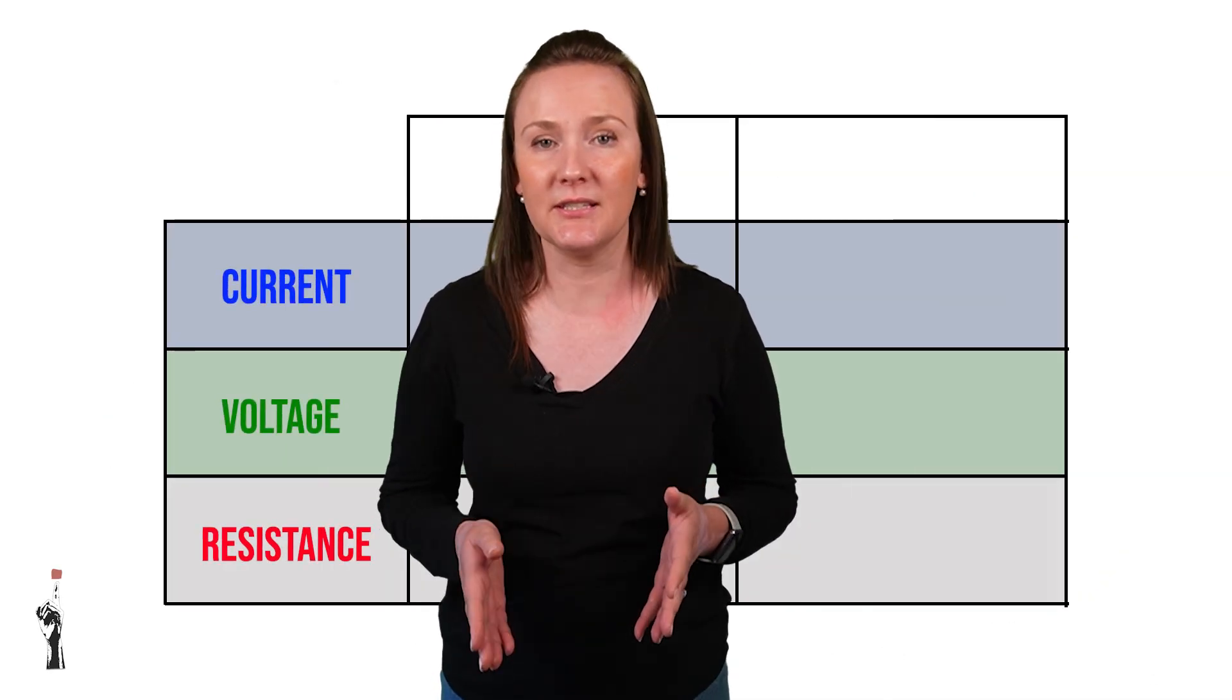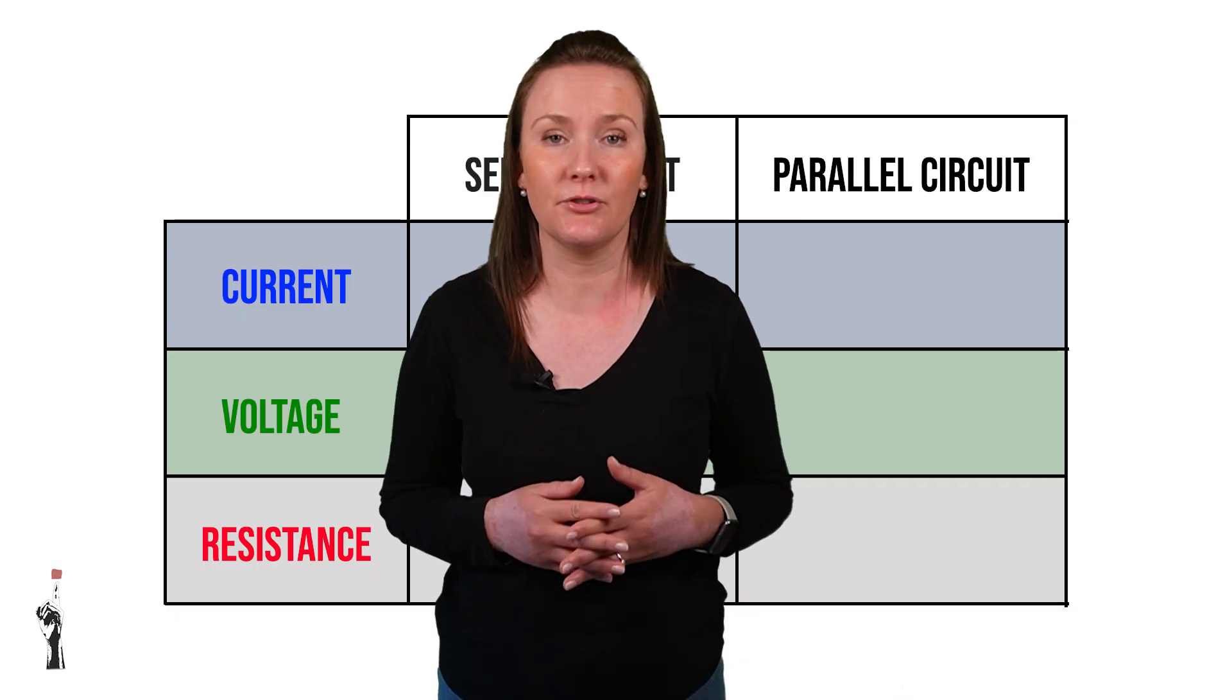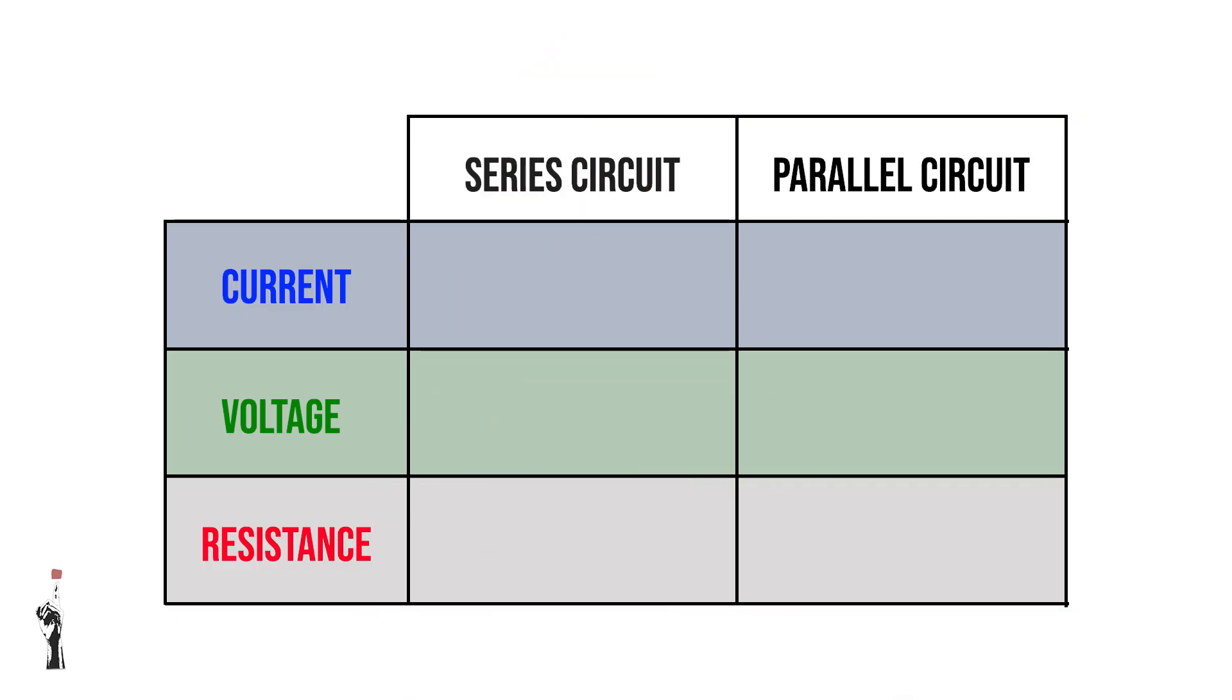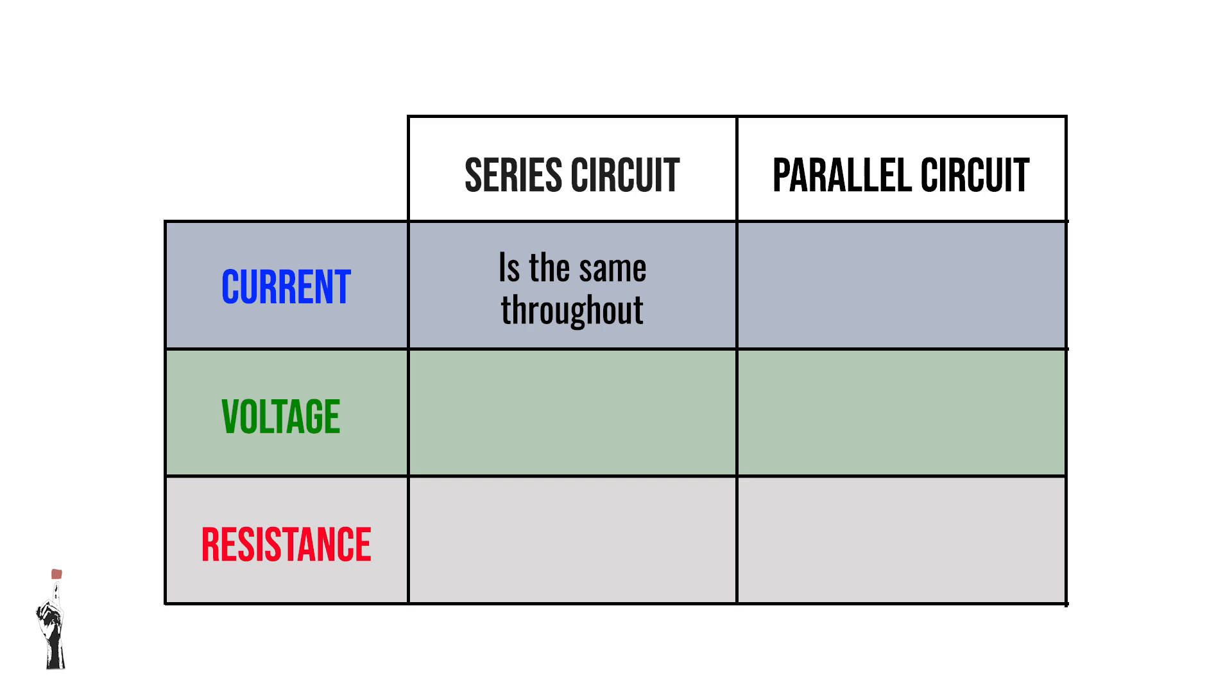Let's compare how current, voltage and resistance behave in both circuits. In a series circuit, the current is the same throughout. Whereas in a parallel circuit, it divides among the branches.